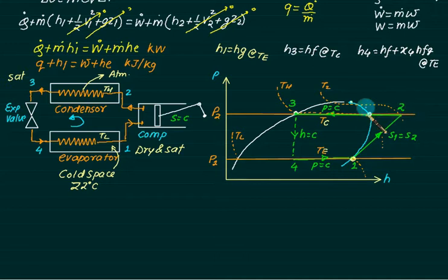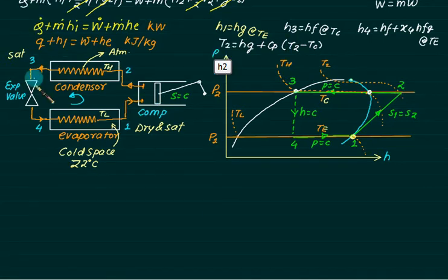Point number two, you have to calculate using the superheat tables. At point number two, we have the enthalpy equal to HG. It should be H2 is equal to HG plus Cp soup into T2 minus Tsh. Tsh is taken as the dome temperature, that is Tc. In this fashion, we can calculate all enthalpy.